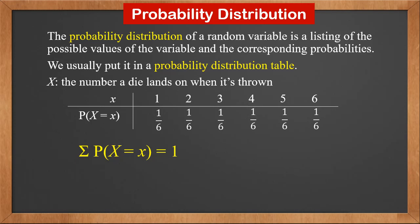After you draw out a probability distribution table, remember to check if all probabilities add to 1. If we put the probabilities in a graph, we can see that probabilities only exist at 1, 2, 3, 4, 5, 6 — because x is discrete. The height of each line is 1/6, and they add up to 1.